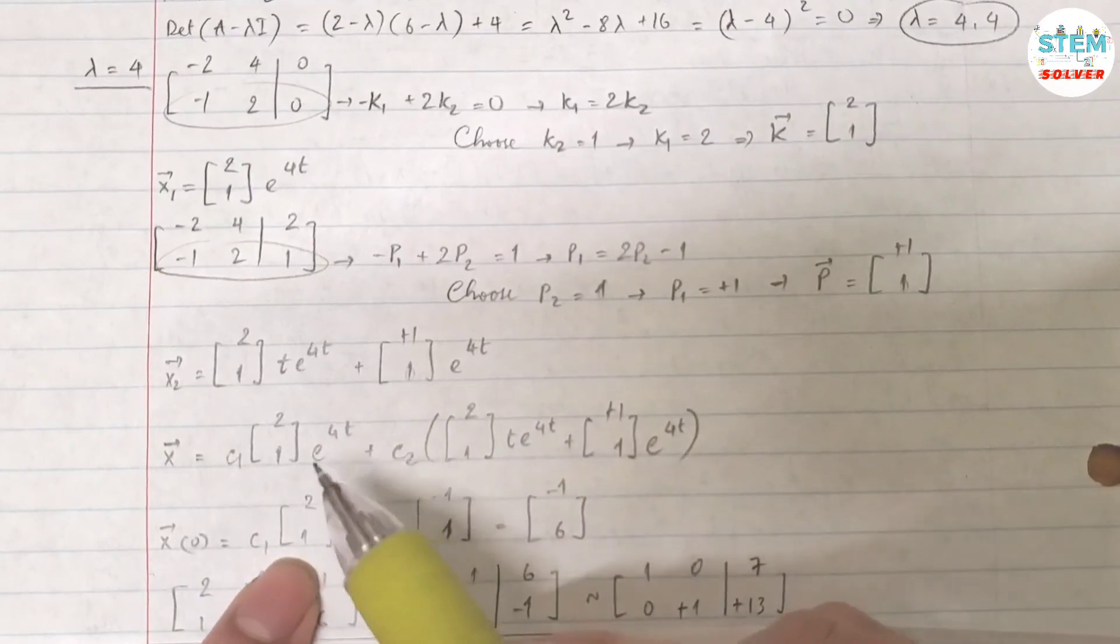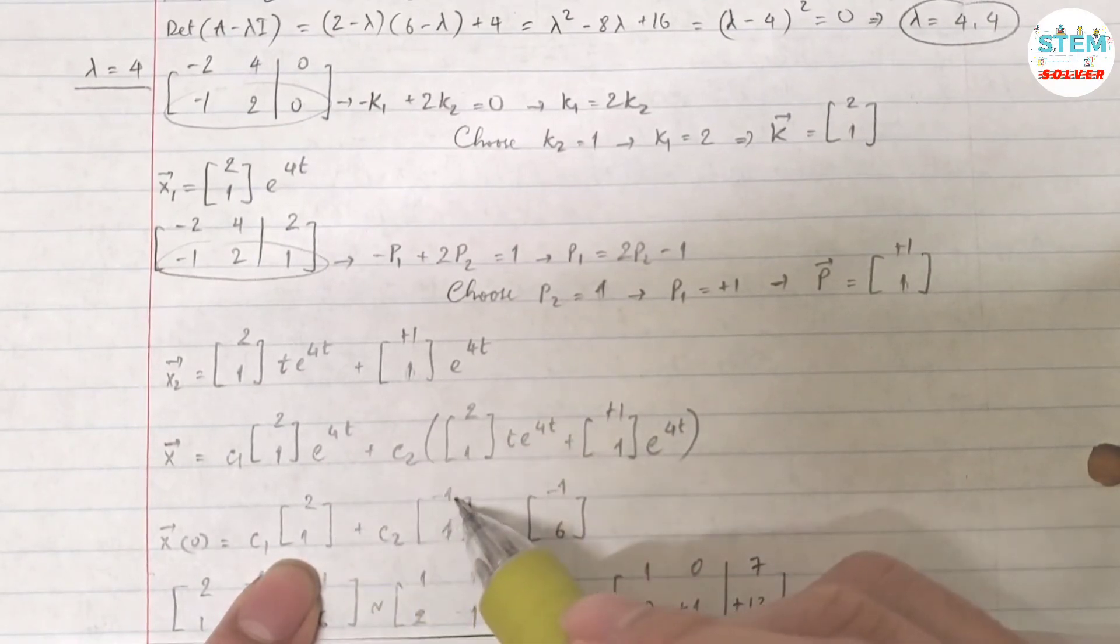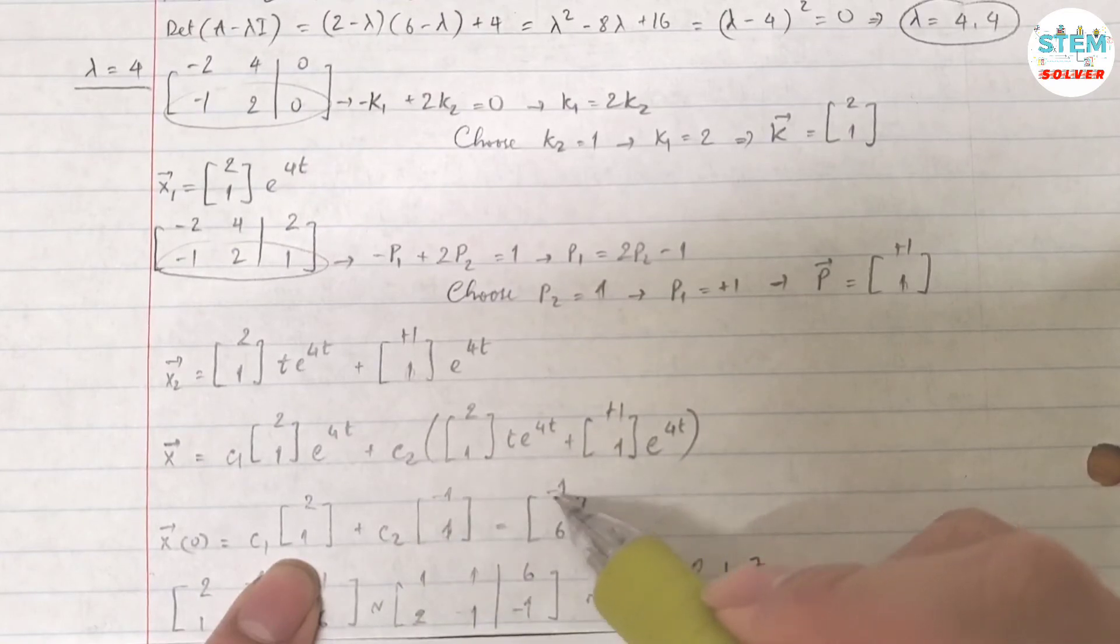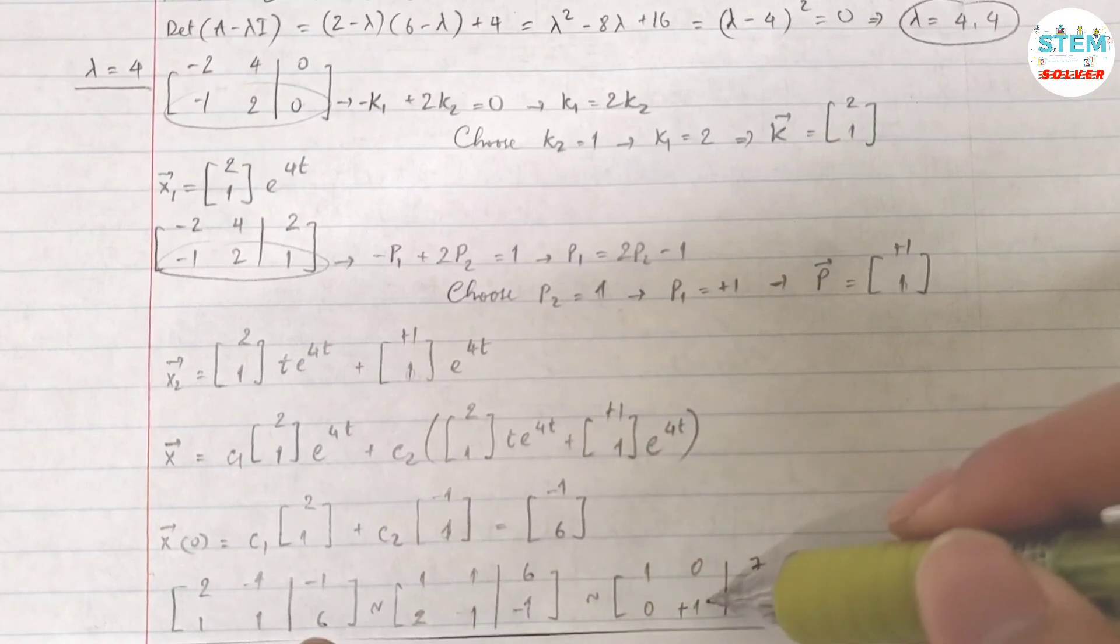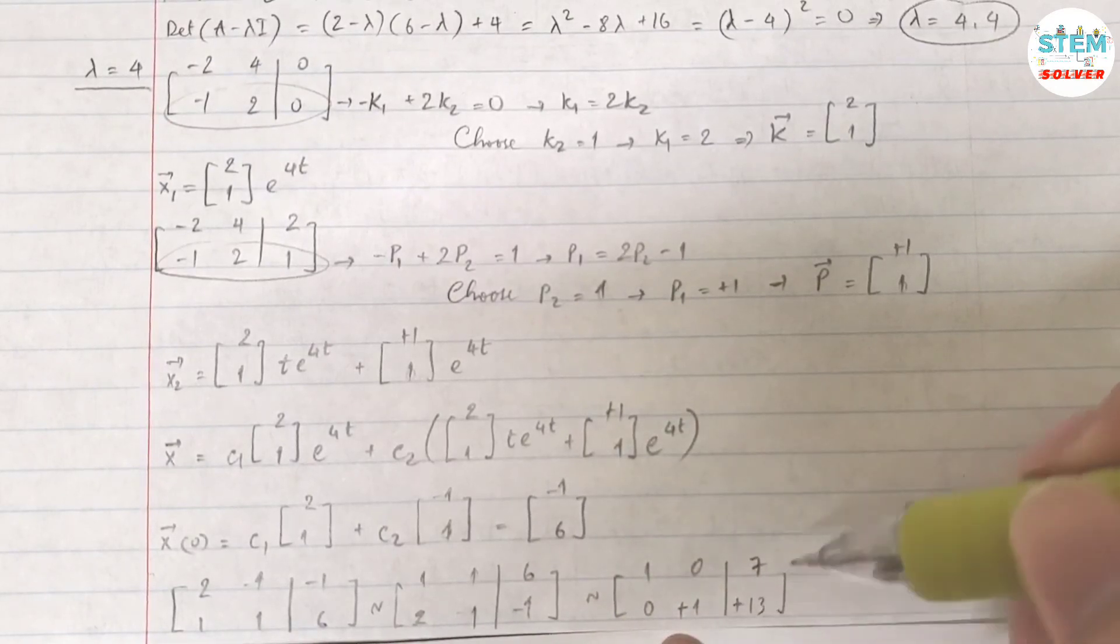So just like you have 2x minus y equals negative 1, you have a system. So if I put it into a matrix, I have [2, 1; -1, 1] augmented towards [-1, 6]. And then I reduce down to a base matrix. I will get c1 equals 7, c2 equals 13.